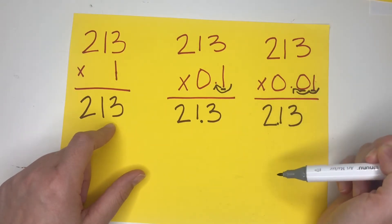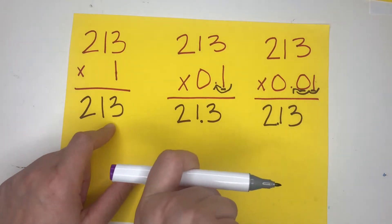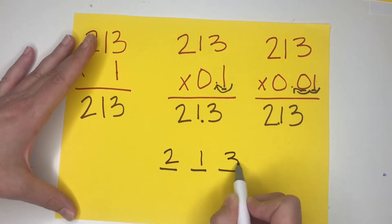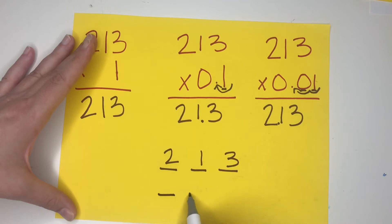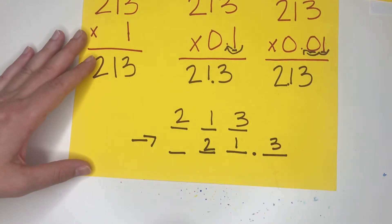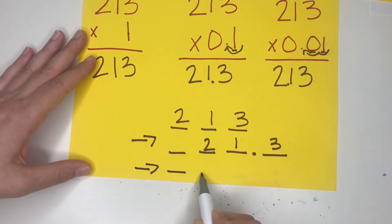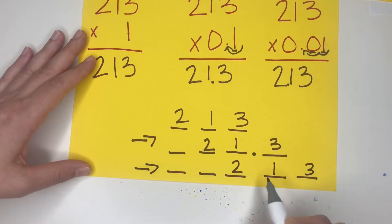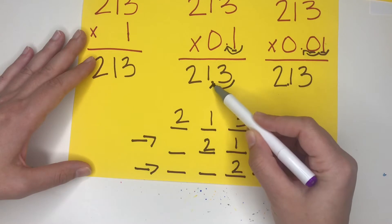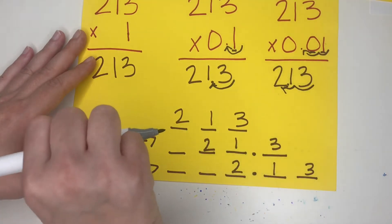Now that we have two decimal places, we hop two decimal places over. We are constantly shifting our digits to the right. If we write them out on a line, we have 213, and then the next one — going to the right — our digits leave the hundreds place and we have 21 and 3 tenths. For the last one, we keep moving to the right and abandon the hundreds and tens place, because now we are in the ones and then into the hundredths place. When multiplying by decimals, we are shifting the digits to the right — the decimal moves inwards, but our digits are actually moving to the right.